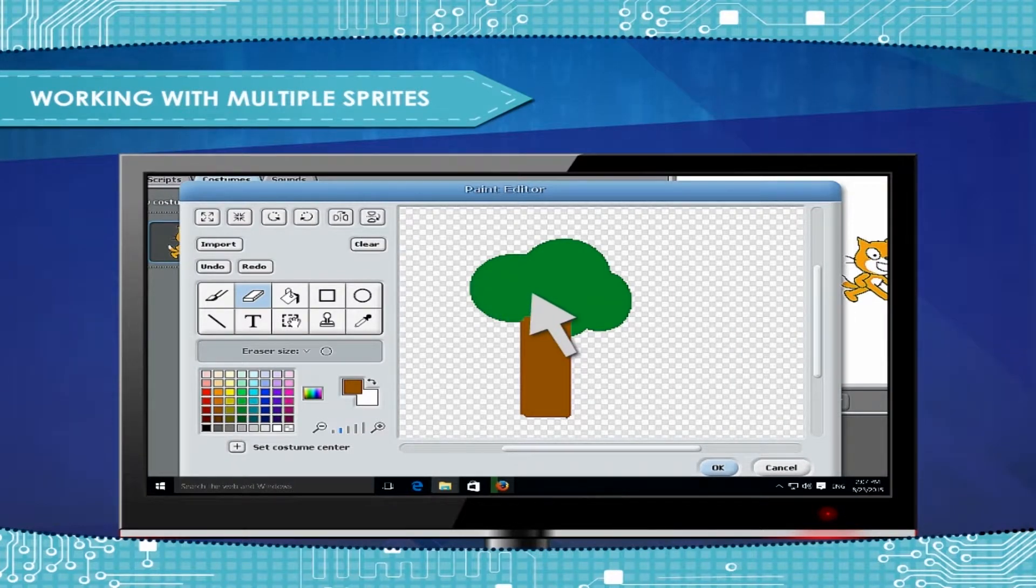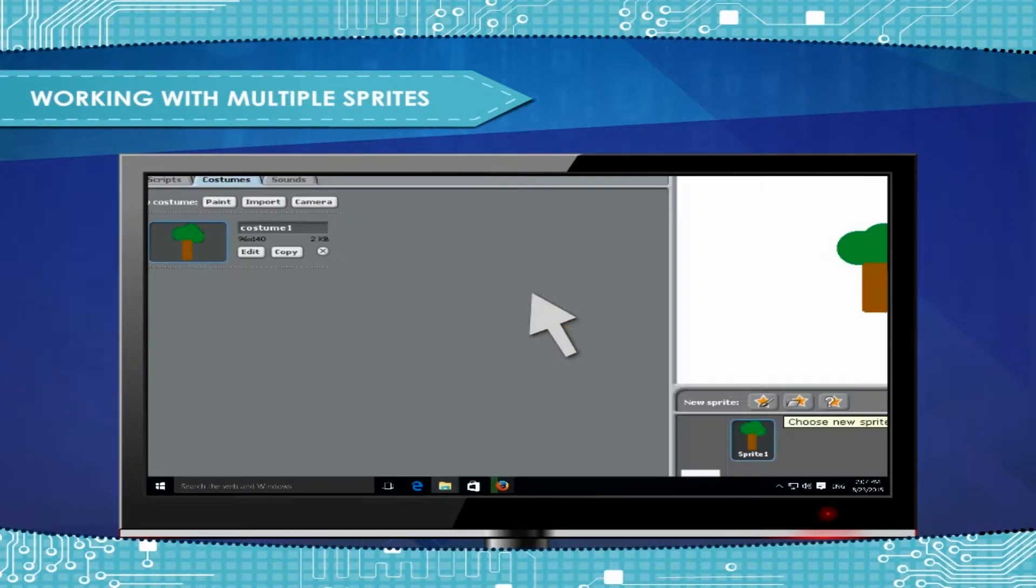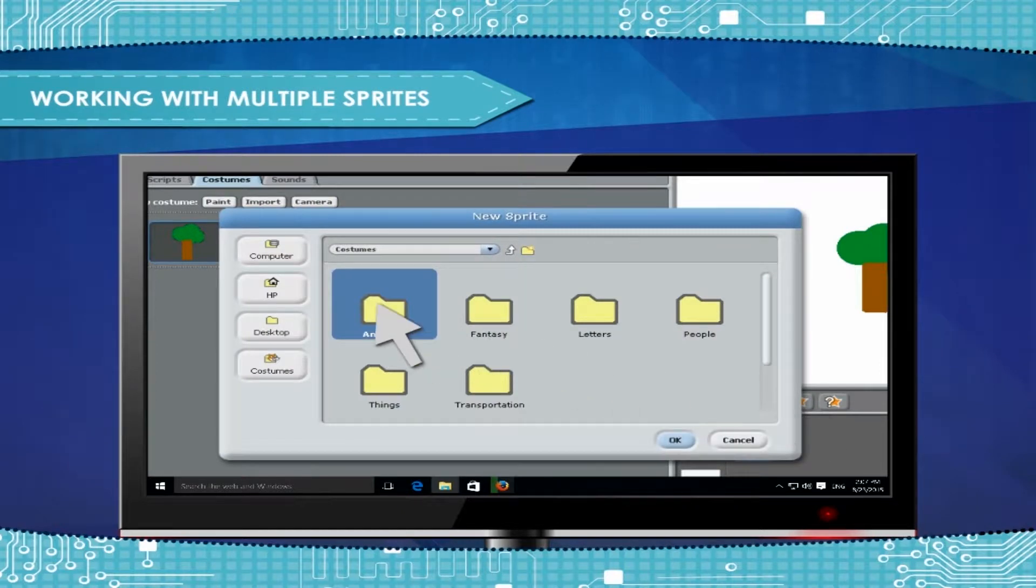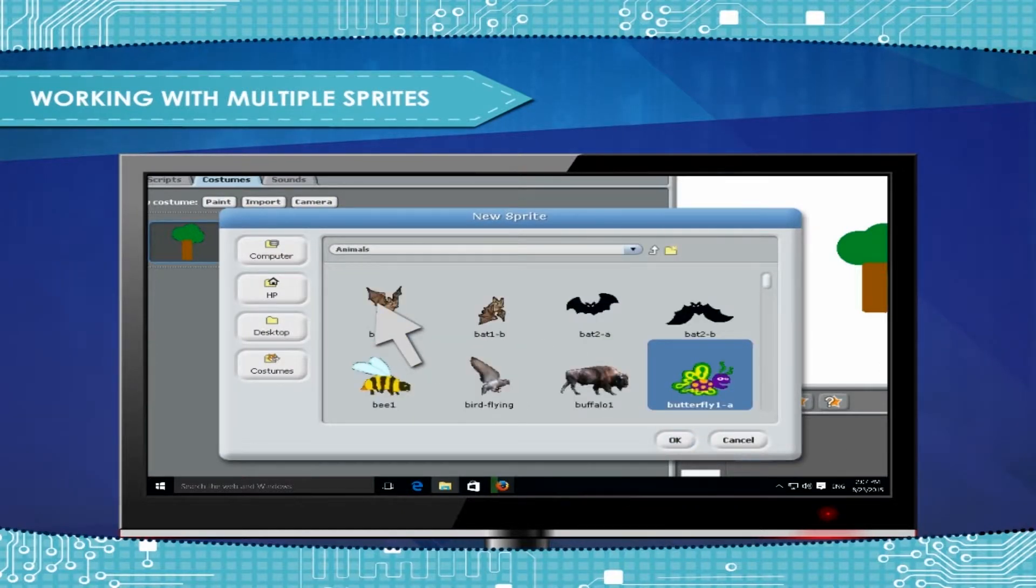In sprite 1, we have made a tree. Now, create another sprite by clicking on the second button in New Sprite section. A box will appear. Select any graphics for your sprite 2. For example, we can select a butterfly.